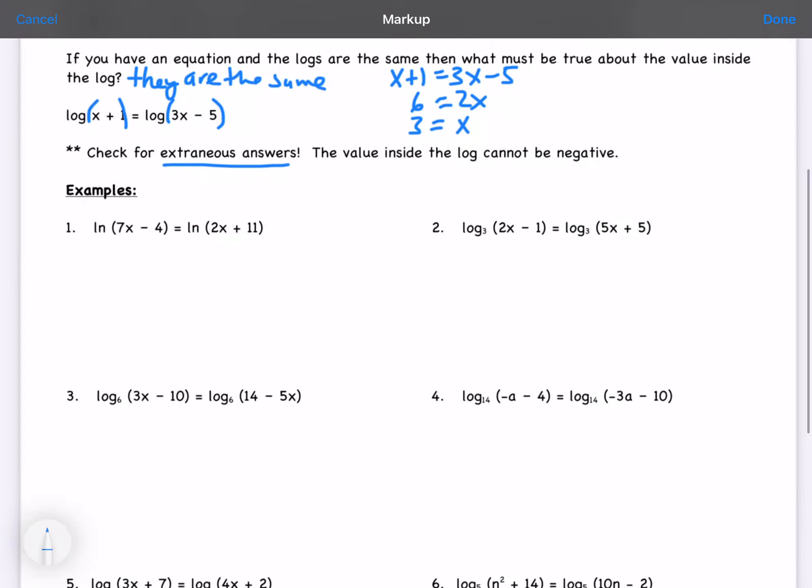So if we look at natural log of 7x minus 4 equal to natural log of 2x plus 11, we get rid of the natural logs, and we set the terms equal to each other. So we end up with 5x equal to 15, and x equals 3.